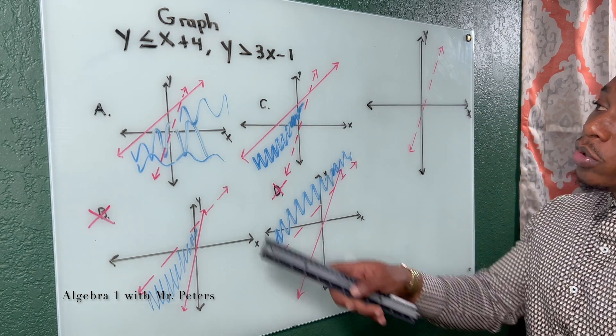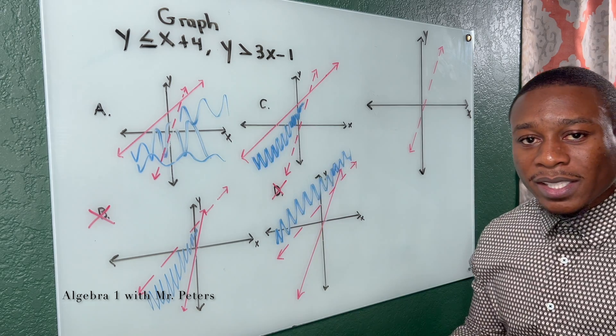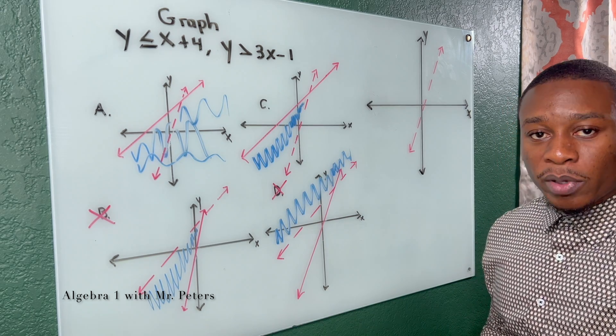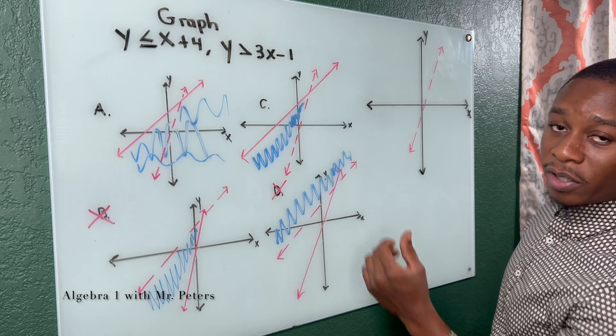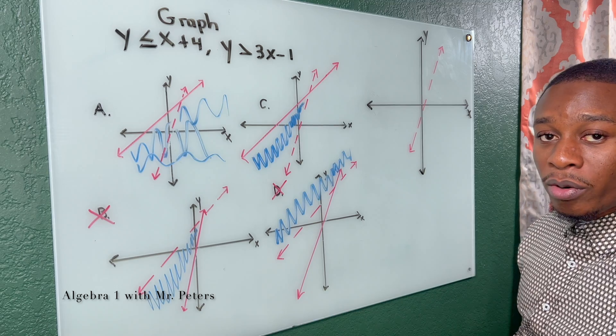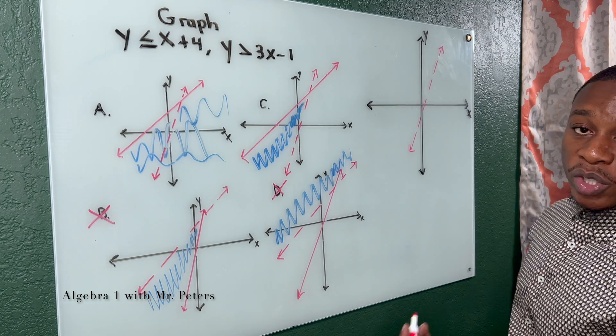Now I go to my other line. It says Y is less than or equal to x plus 4. But before we get there, how would we shade for this? So if it's greater than, that means we shade above.